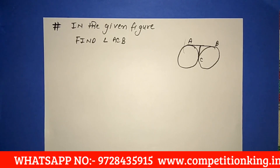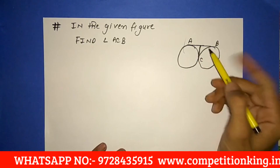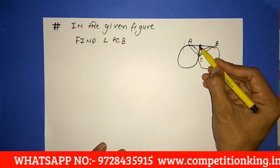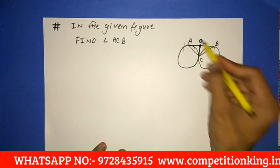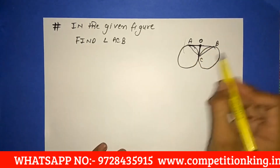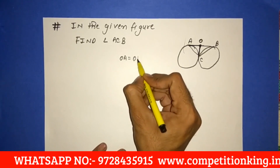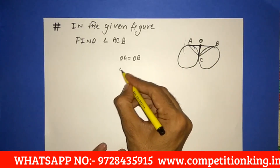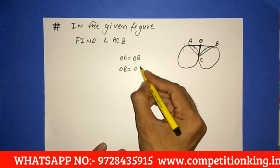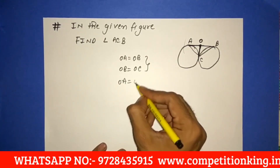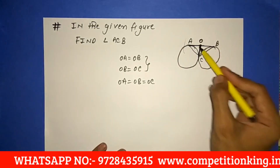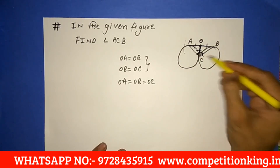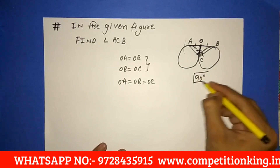Now see one more question on this concept: In the given figure, find the value of angle ACB. Let's call the outer point O. OA and OC are tangents to the circle, and tangents from the same external point are always equal, so OA equals OC. Similarly, OB and OC are tangents to the circle, so OB equals OC. Therefore OA equals OB equals OC — all three are equal. If all three are equal, this angle ACB is 90 degrees.